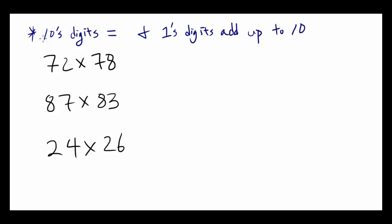Like in the first case, the 10th digits are the same, they are both 7. And the ones digit 2 plus 8 add up to 10. So in this case, you can use a special multiplication trick.